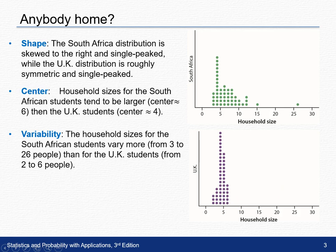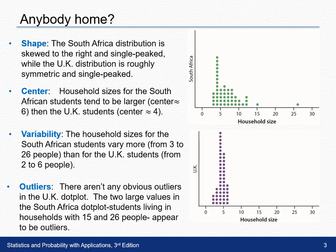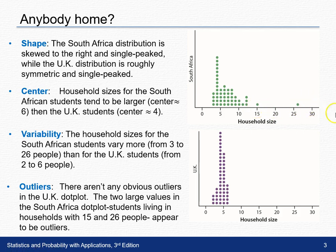The last thing we want to look at is whether there are any outliers. There aren't any obvious outliers in the UK plot. But if you look at the South African plot, there are two potential outliers: this student here with 15 people living in their household, and this last student here with 26 people living in their household.